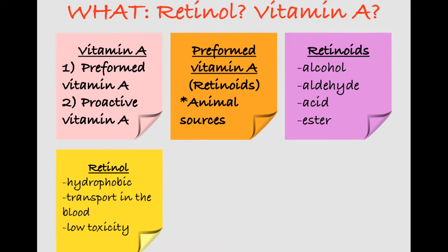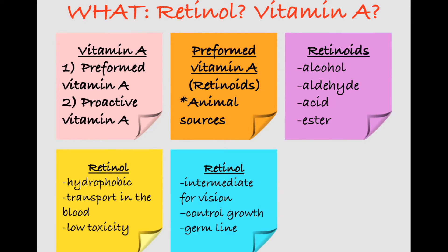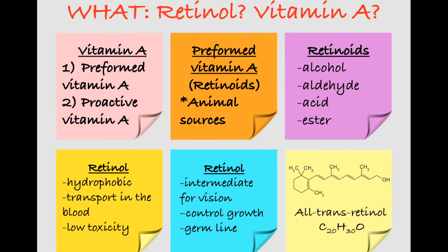Retinol is known to be an intermediate for vision, plays a significant role in the control of B lymphocyte growth, and is significant in the expression of the BMP4 gene in the germline cells. As you can see, it has a formula of C20H30O, and we'll be focusing on the all-trans retinol configuration of this molecule.